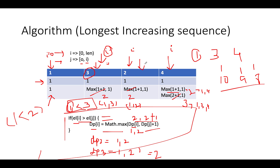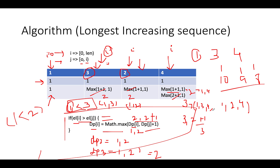j moves to index 2 which points to element 2, and 4 > 2 is satisfied. dp[3] = max(3, 2+1) = 3, so the value stays at 3. Another valid sequence is 1, 2, 4. So there are two sequences possible — 1, 3, 4 and 1, 2, 4 — and the maximum length across the dp array is 3. The time complexity of this approach is O(n²) and space complexity is O(n).